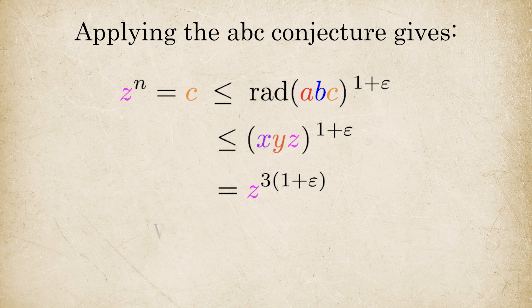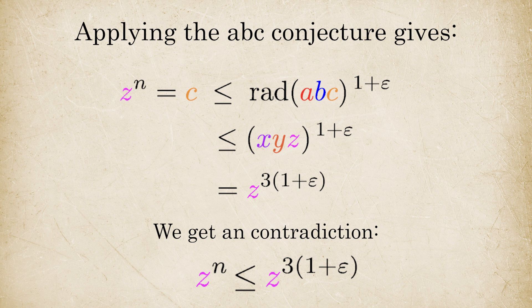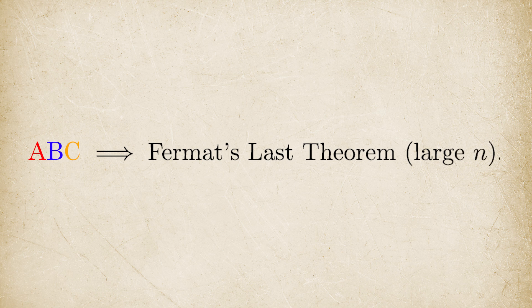But that can't be true, because when N is large, Z to the N grows way faster than Z to the 3 plus epsilon. So we get a contradiction, meaning our original assumption must be false. Therefore, the ABC conjecture would imply Fermat's last theorem for all large exponents. The small cases can be checked separately.